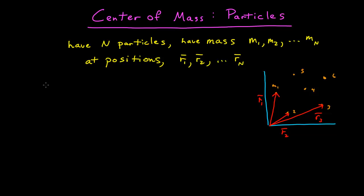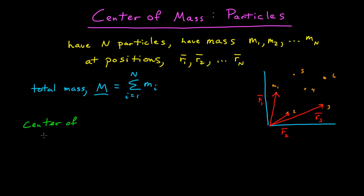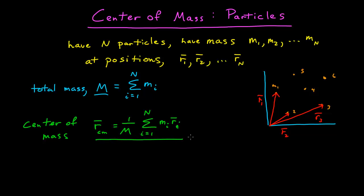The first thing we want to define is the total mass, which I will call capital M, which is the sum from i equals 1 to n of all the individual masses. So sum up all the masses and you get the total mass. From that, we can now define the center of mass for a system of particles. That center of mass, which is a vector r_cm, is equal to 1 over the total mass times the sum from i equals 1 to N of each individual mass times its position vector.